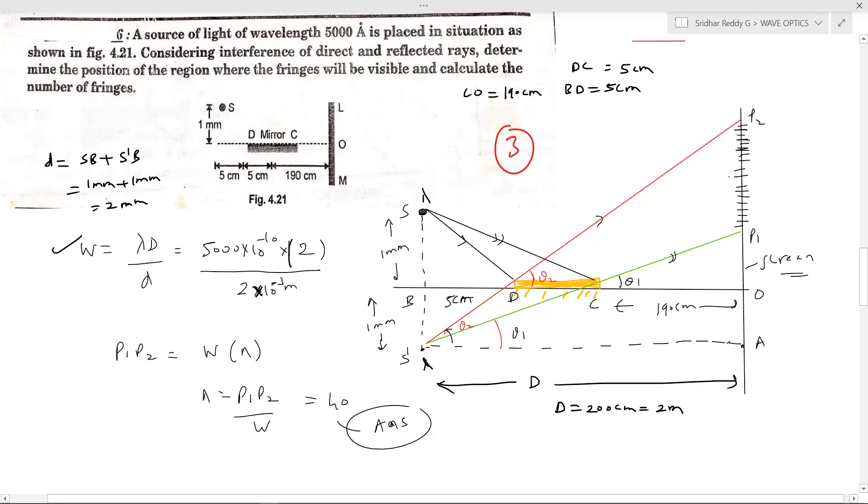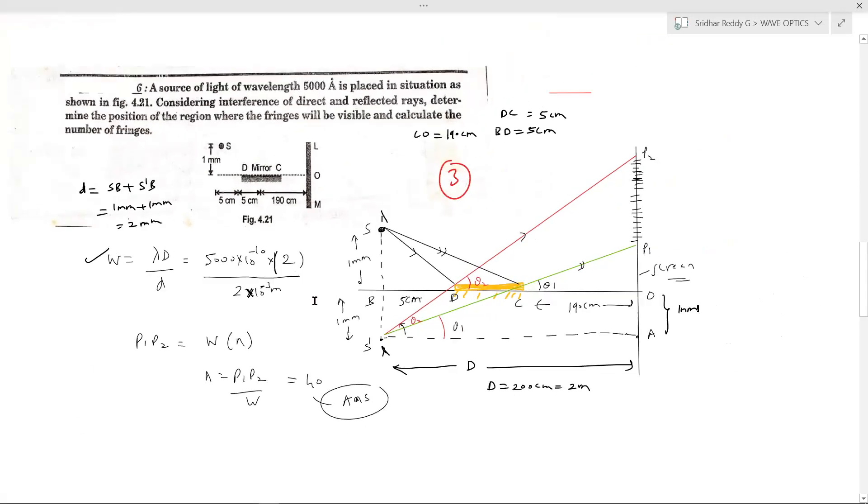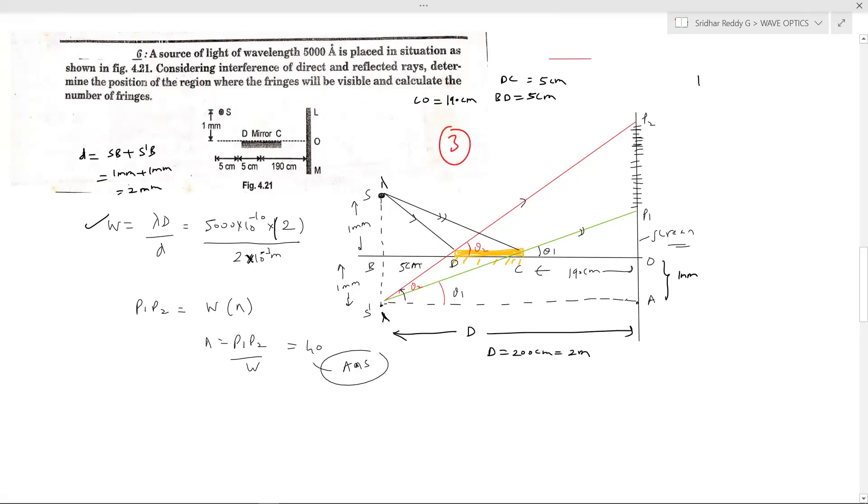How to calculate the distance P1 P2? I'll take help of this triangle. Tan theta 1, tan theta 2 will be P2 A. So tan theta 2 should be equal to P2 A by S dash A. So let me write that simplification. What is tan theta 2? P2 A by S dash A. S dash A is in fact equal to capital D. So therefore this P2 A will become D tan theta 2.